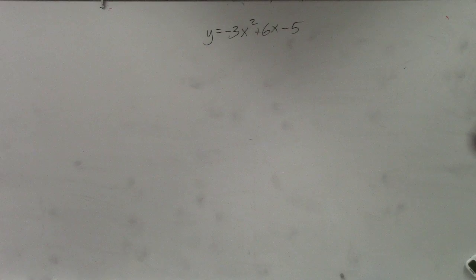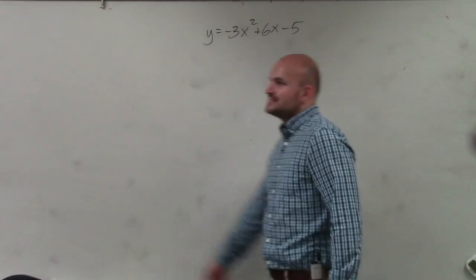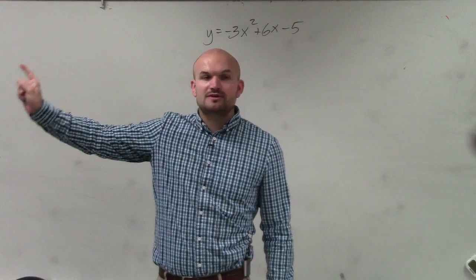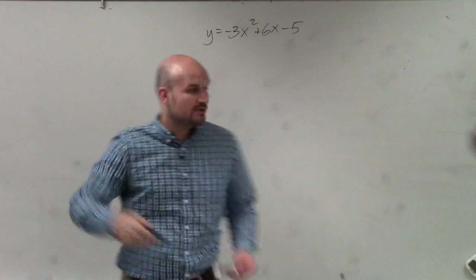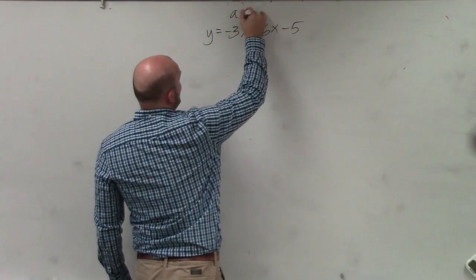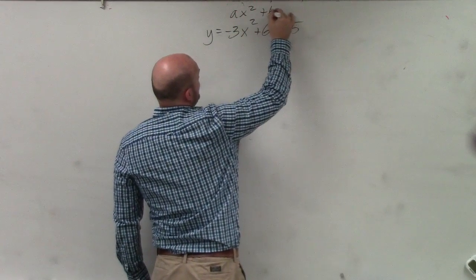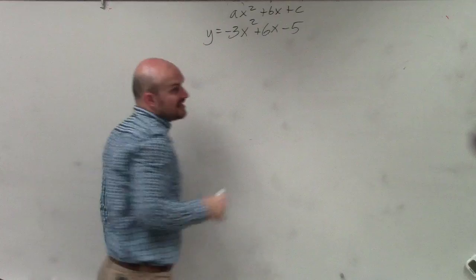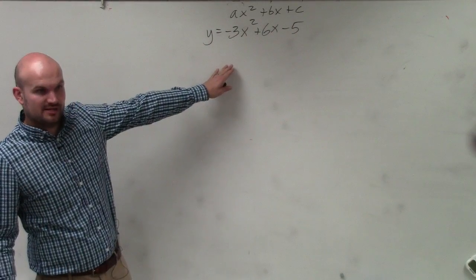We have to remember how to convert to vertex form. So I'm going to go through the step-by-step process for you. For questions 5 and 6, a, which is your coefficient of your x squared term, is not 1. It's negative 3. Do you guys see that?